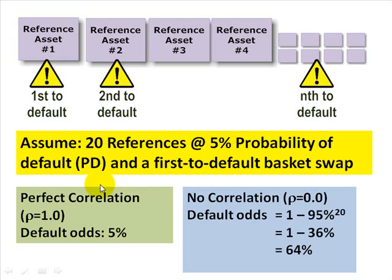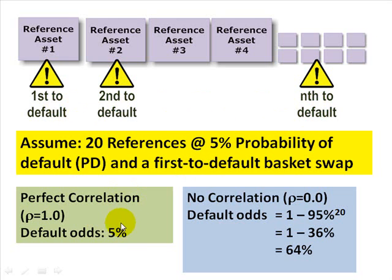Consider two scenarios. With perfect correlation — rho equals 1 — the odds of the basket triggering are 5%, because all assets move together. They all have a 5% probability of default, so we're either going to have all of them default with 5% probability, or none of them default with 95% probability. That's perfect correlation.